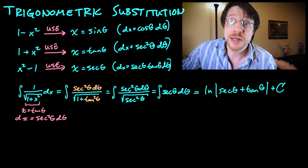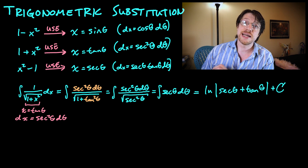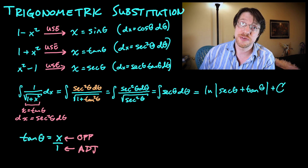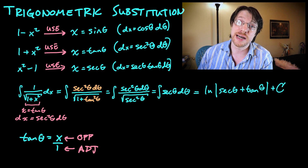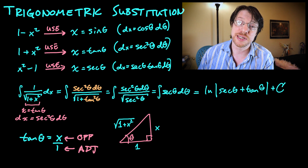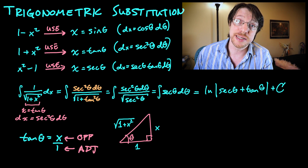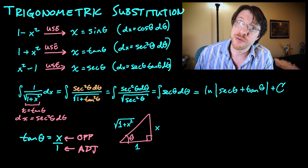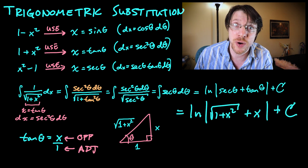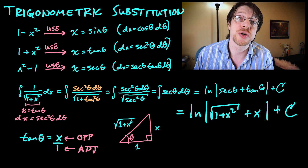But we're not done — we have to replace secant and tangent with expressions in x. Since tangent of theta equals x, that means x is the opposite side and 1 is the adjacent side of a right triangle. By the Pythagorean theorem, the hypotenuse is the square root of 1 plus x squared. So secant of theta — hypotenuse over adjacent — is the square root of 1 plus x squared divided by 1. And tangent of theta is just x. So the final answer is the natural log of the absolute value of the square root of 1 plus x squared plus x, plus c.